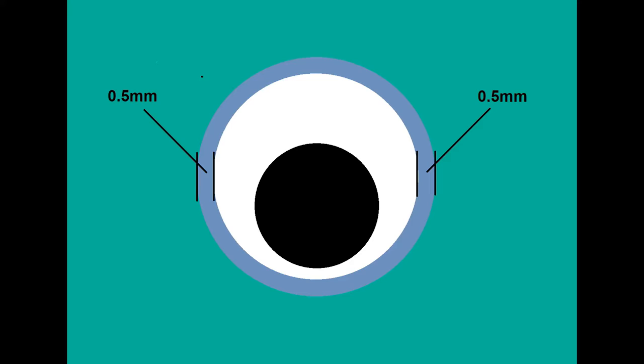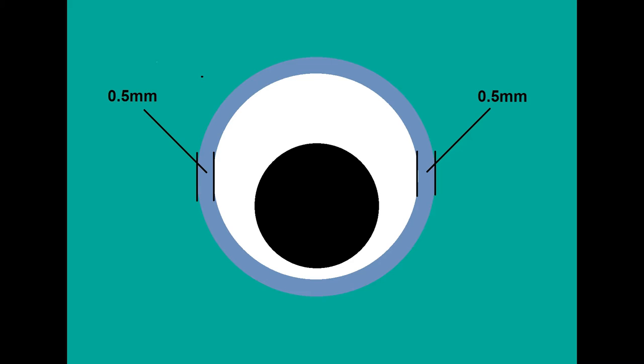With those cylinders — and this is probably the only real teaching moment today — I use a 0.5 millimeter clearance around my googly eyes. So if my googly eye is 10 millimeters in diameter, the diameter of my cylinder is going to be 11 millimeters.